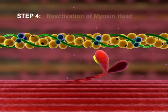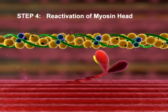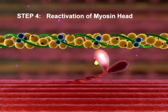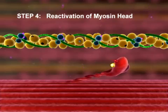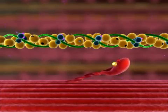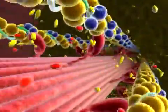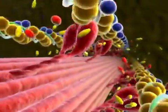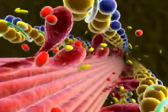Step 4: Reactivation of the myosin head. ATP is hydrolyzed to ADP and inorganic phosphate. The energy released during hydrolysis reactivates the myosin head, returning it to the cocked position. As long as the binding sites on actin remain exposed, the crossbridge cycle will repeat.